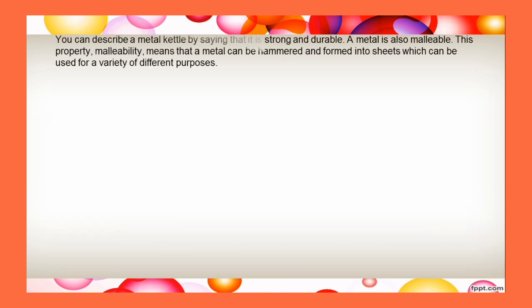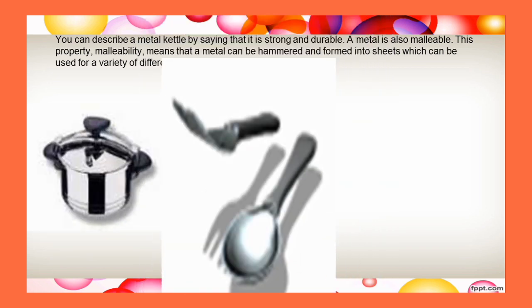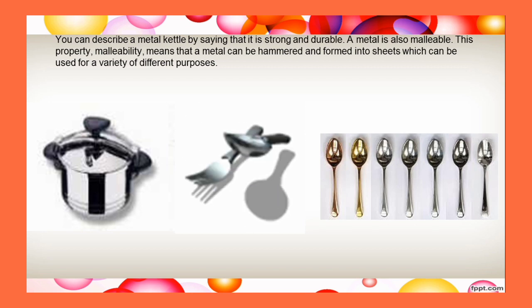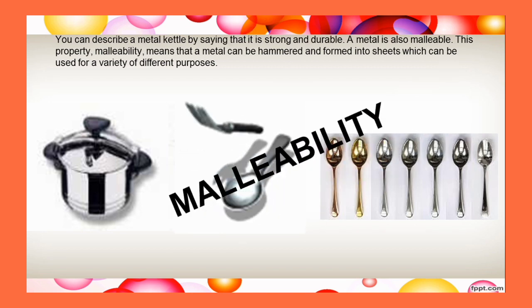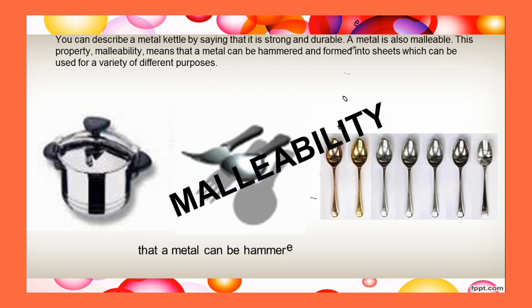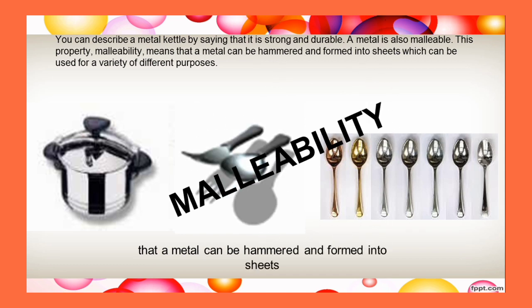You can describe a metal kettle by saying that it is strong and durable. A metal is also malleable. This property, malleability, means that a metal can be hammered and formed into sheets which can be used for a variety of different purposes.